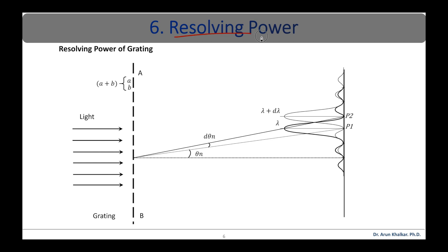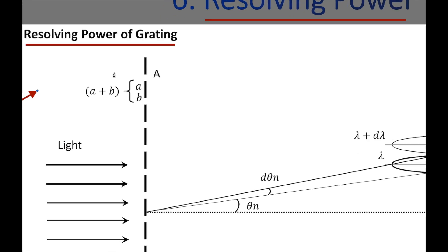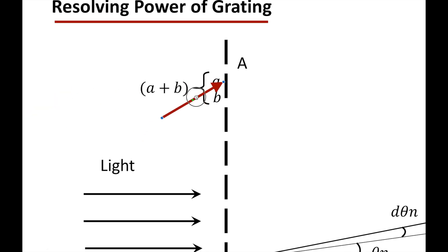Now let us see what is resolving power. The capacity of an optical instrument to show separate images of two very closely placed objects is called resolving power. The resolving power of a diffraction grating is defined as its ability to form separate diffraction maxima of two closely separated wavelengths. In this diagram, a and b represent the surface of a plane transmission grating having grating element (a + b), where capital N is the total number of slits.